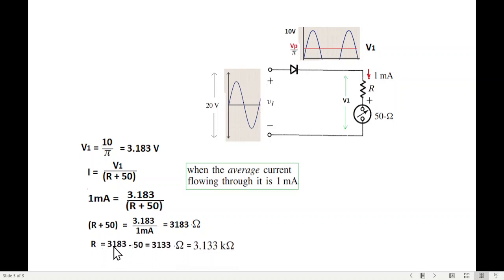So R is 3183 minus 50 equals 3133, or 3.133 kilo ohm. When we take voltage and divide by milli, we get total resistance in terms of kilo. So total resistance is 3183 ohms.